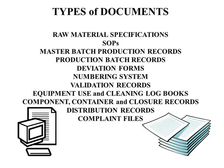Documents are divided into three main types. The first type is specification documents, such as for bulk raw materials. These documents contain the name of the material, the features, purity status, storage conditions, physical and chemical characteristics, weight, and date of release and expiration.